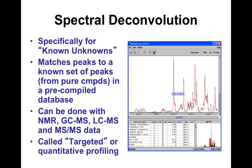Spectral deconvolution works for NMR, GCMS, and LCMS — it's a general method. The principle is to match peaks in your mixture (blood, urine, tree sap, etc.) to known peaks of pure single-compound spectra. That means you need a pre-compiled database of pure, clean spectra.